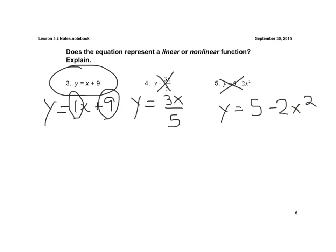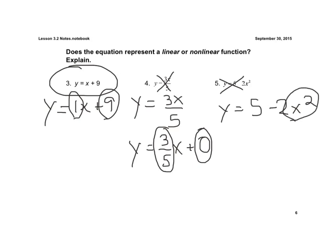This one is y equals 3 times x all over 5. I could rewrite it as y equals 3 fifths times x plus 0, so I can identify my m to be 3 fifths and my b to be 0. Here, because the x is raised to the second power, that's non-linear.